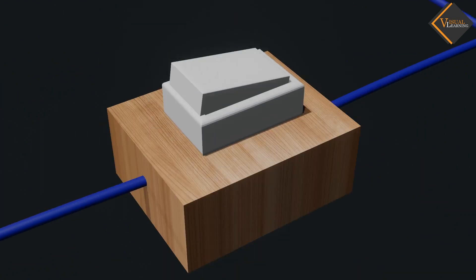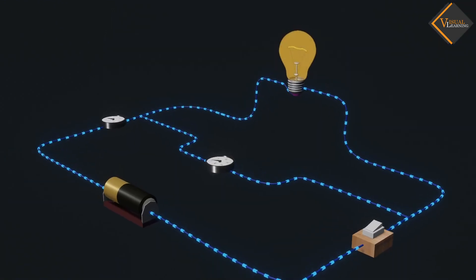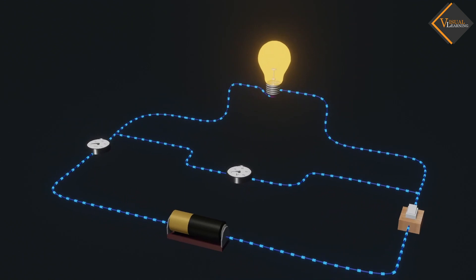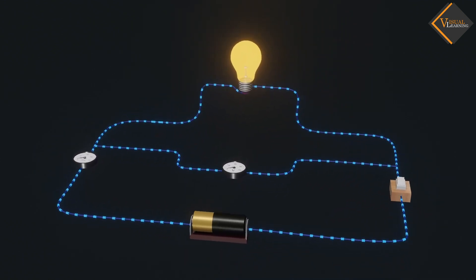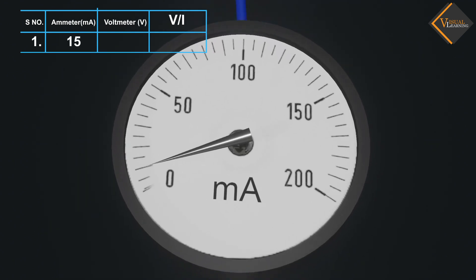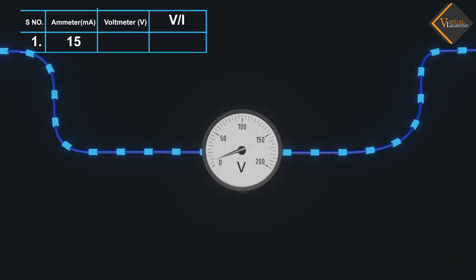Now turn on the switch. Current starts to flow in the circuit and bulb starts to glow. Now note the respective readings of the ammeter and voltmeter.